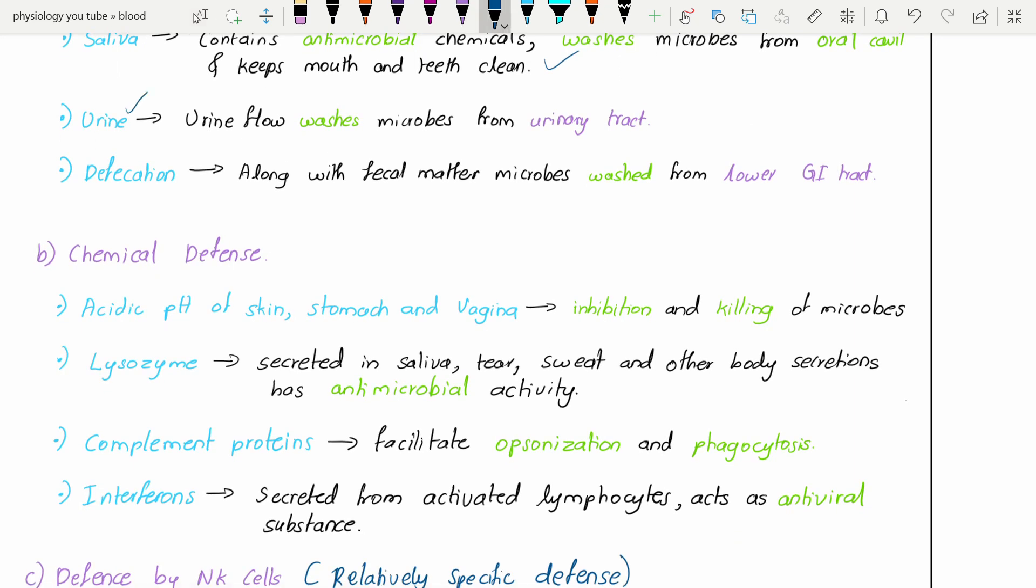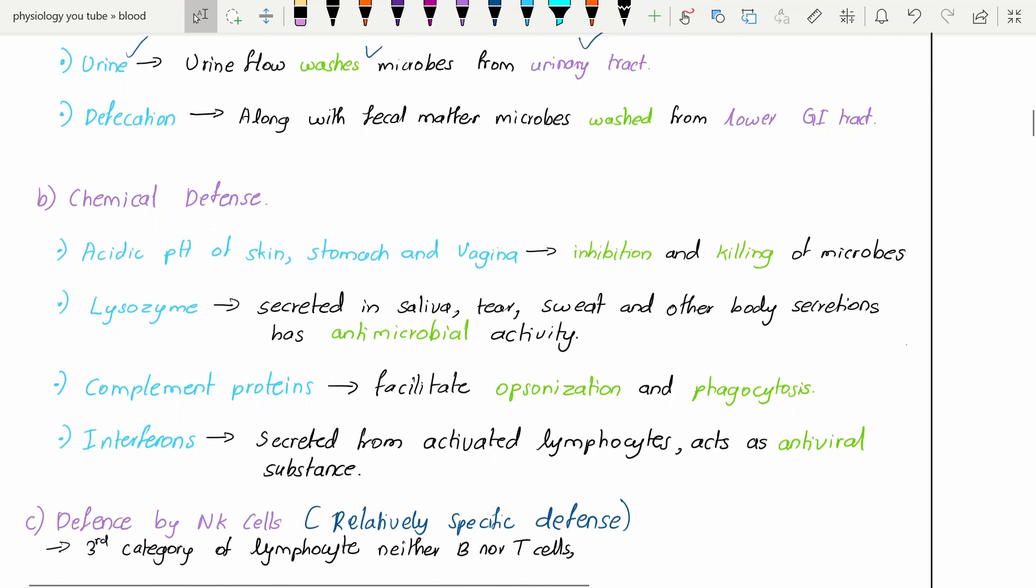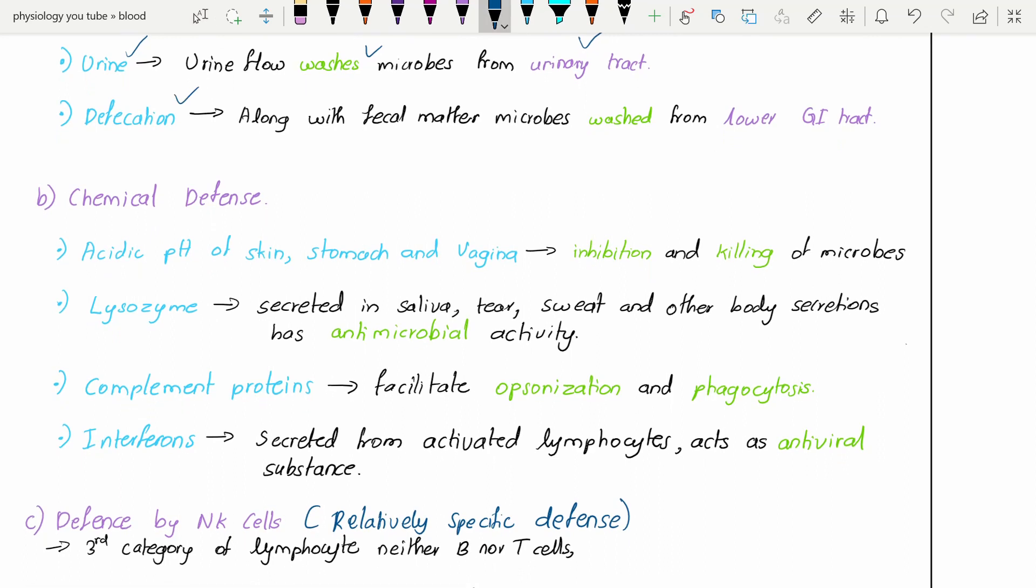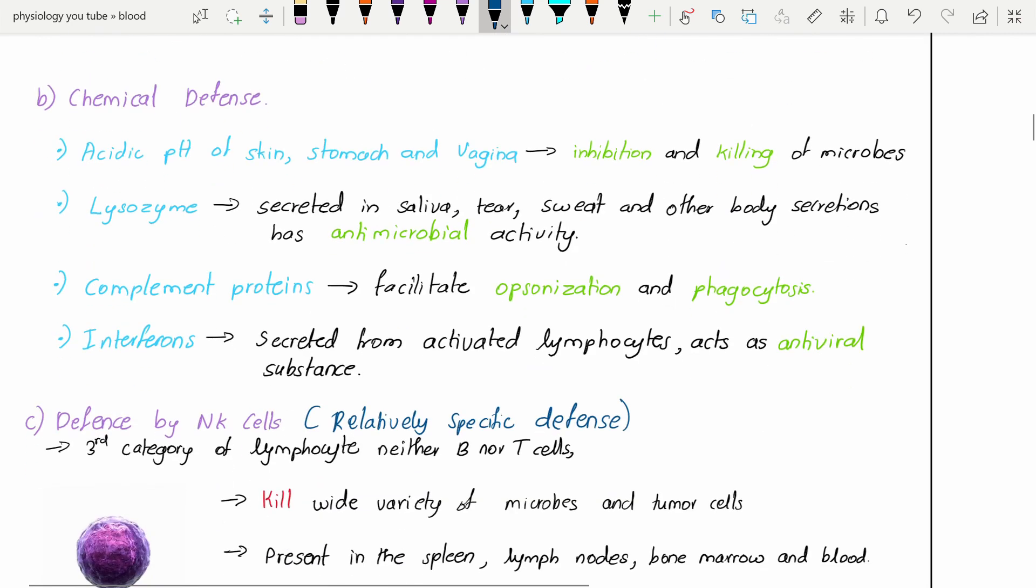Urine - the urine flow washes the microbes from the urinary tract. Sometimes the urine flow will be fast or slow, but it definitely washes the microbes from the urinary tract. Defecation - along with fecal matter, some of the microbes are also washed from the lower GI tract.